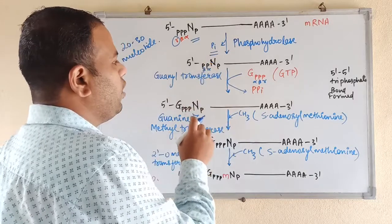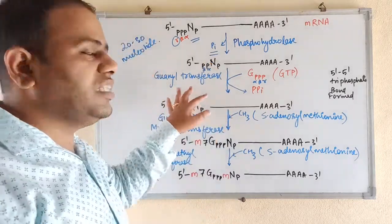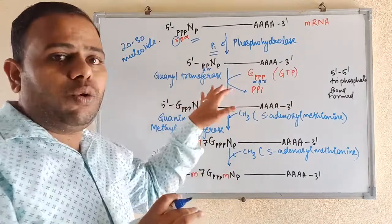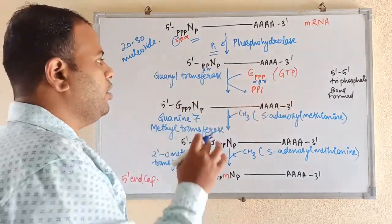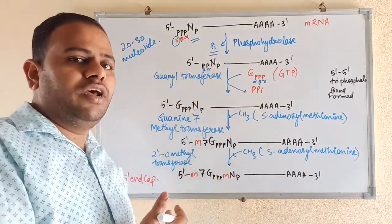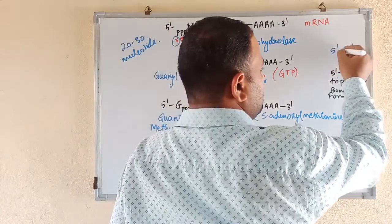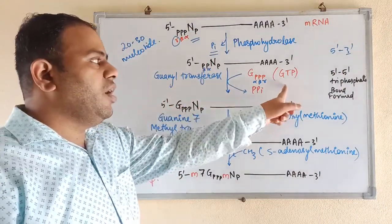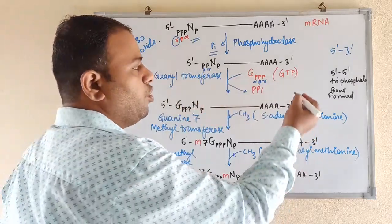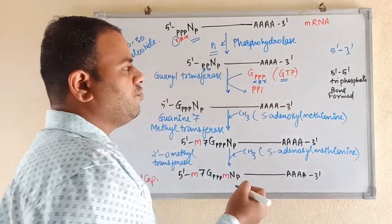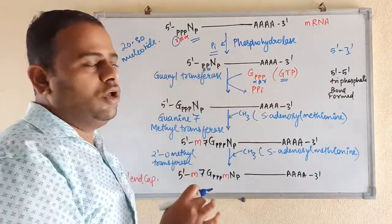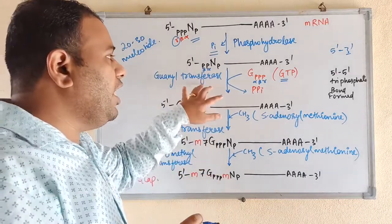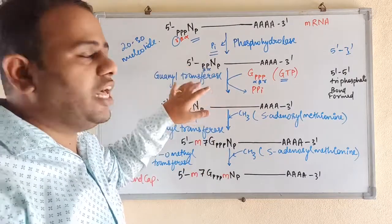Now guanyl transferase enzyme transfers the guanyl group — GTP, that is guanyl triphosphate. The guanyl nucleotide added at the 5 prime end is added in an inverted manner. Normally when a triphosphate is added with another triphosphate, a 5 prime to 3 prime phosphodiester bond is formed — a regular phosphodiester bond as in DNA. But here a different bond is formed: since guanyl transferase incorporates the guanyl in an inverted manner, the 5 prime phosphate of guanyl attaches to the 5 prime end, forming a 5 prime triphosphate bond, which blocks the reactive 5 prime end of the mRNA strand, thereby protecting it.